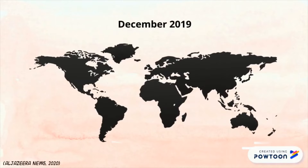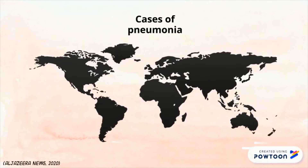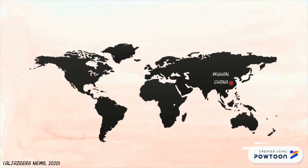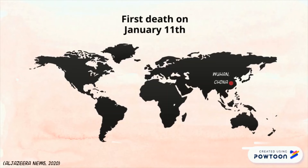On December 31st, 2019, there were several cases of pneumonia detected in Wuhan, China. However, it wasn't until January 7th, 2020, that Chinese authorities identified the 2019 novel coronavirus, with the first coronavirus death on January 11th.